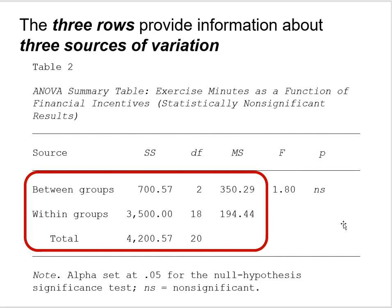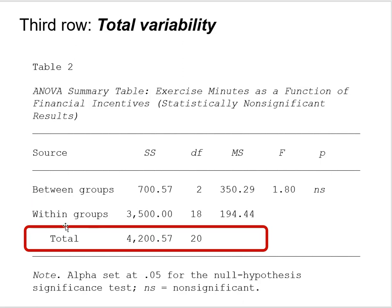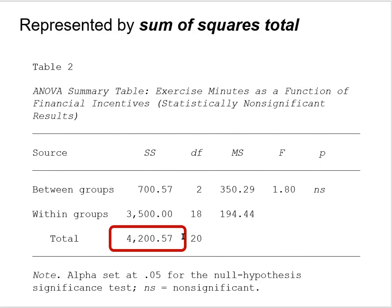In the ANOVA summary table, the three rows provide information about three sources of variation. Notice the heading 'source' — that's short for source of variation. Below it we have 'between groups,' 'within groups,' and 'total.' We'll actually begin with the bottom row: the third row is headed 'total,' and it contains information about the total variability in the data set. That total variability is represented by the sum of squares total — in this case the value is 4,200. The numbers in the sum of squares column are not standardized, so they can be astronomically large.